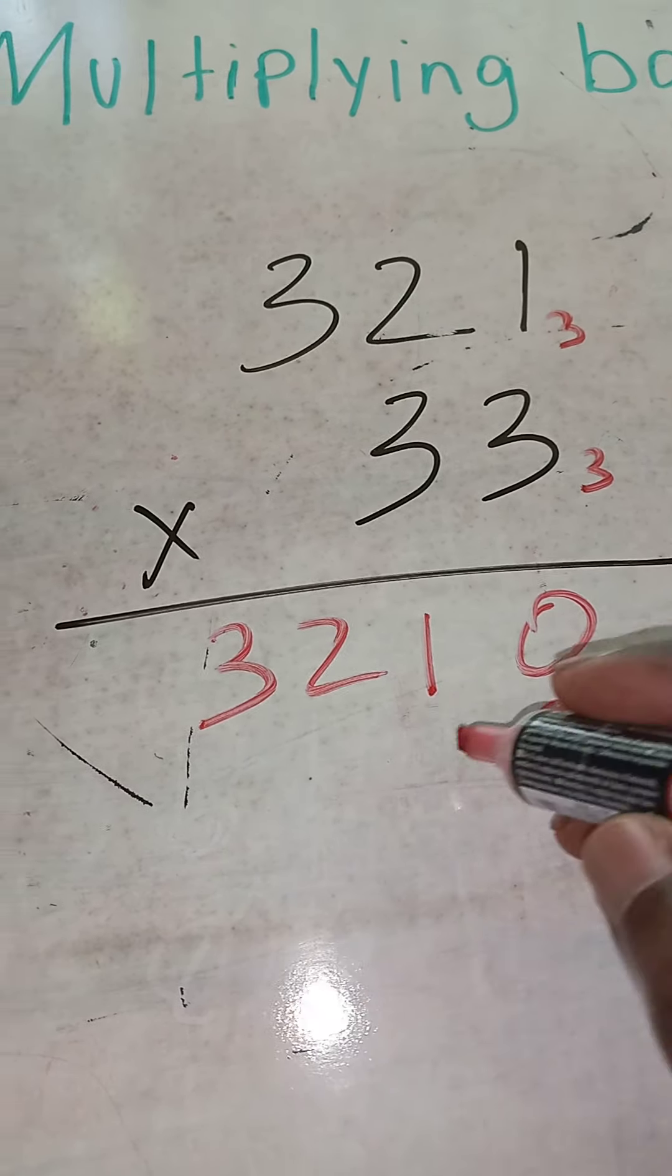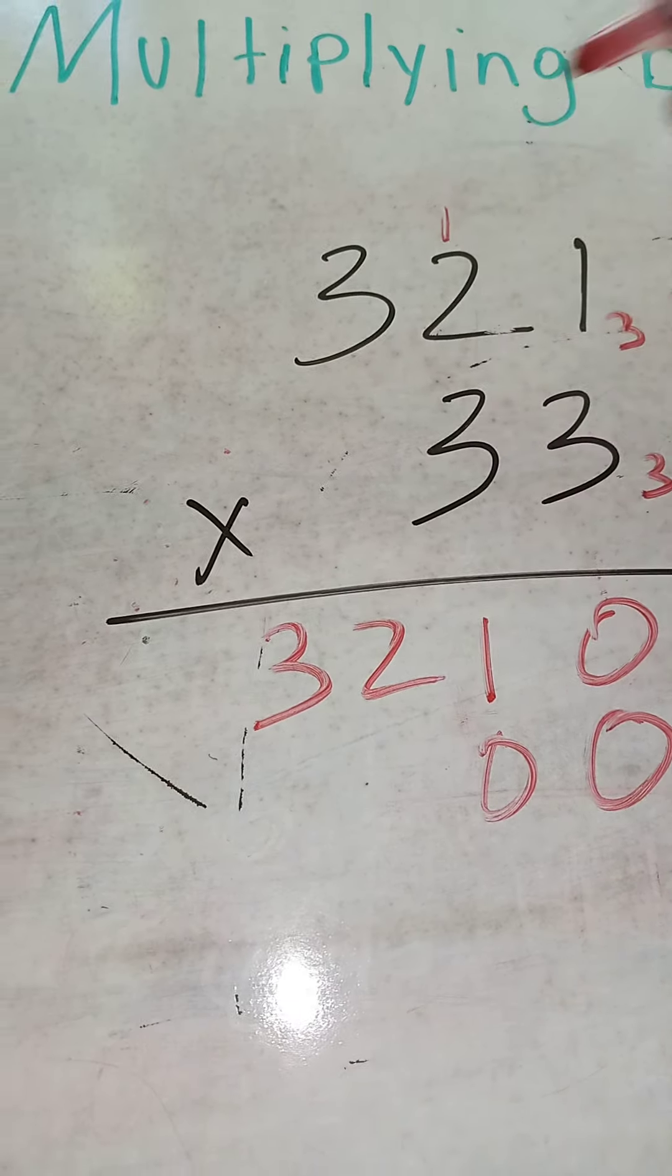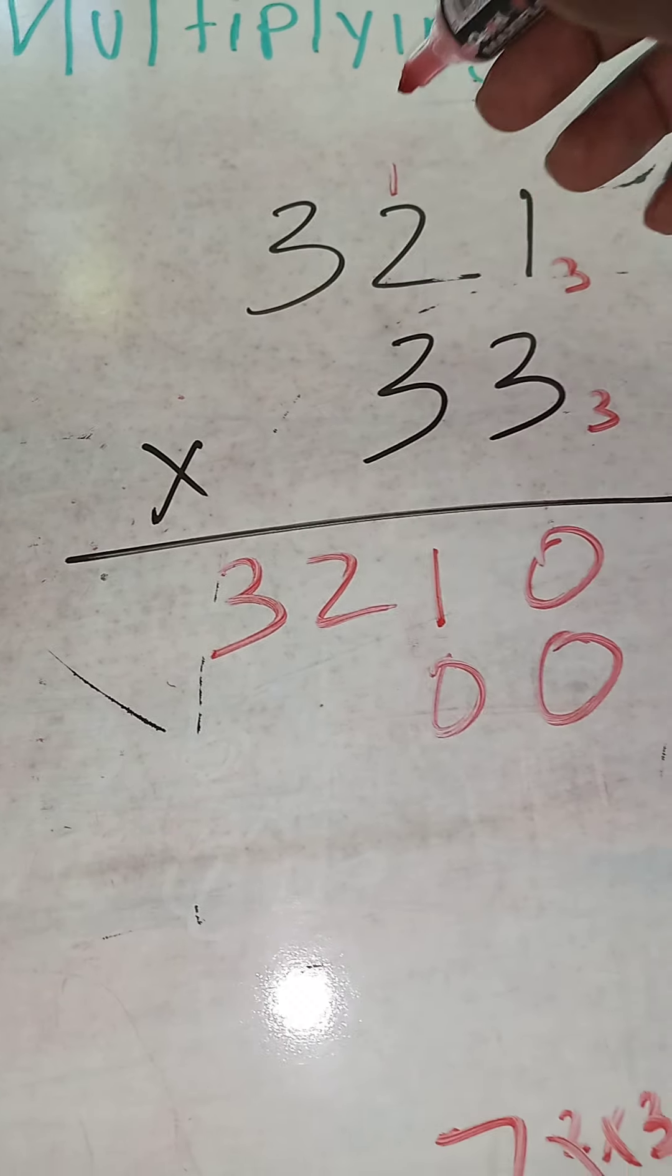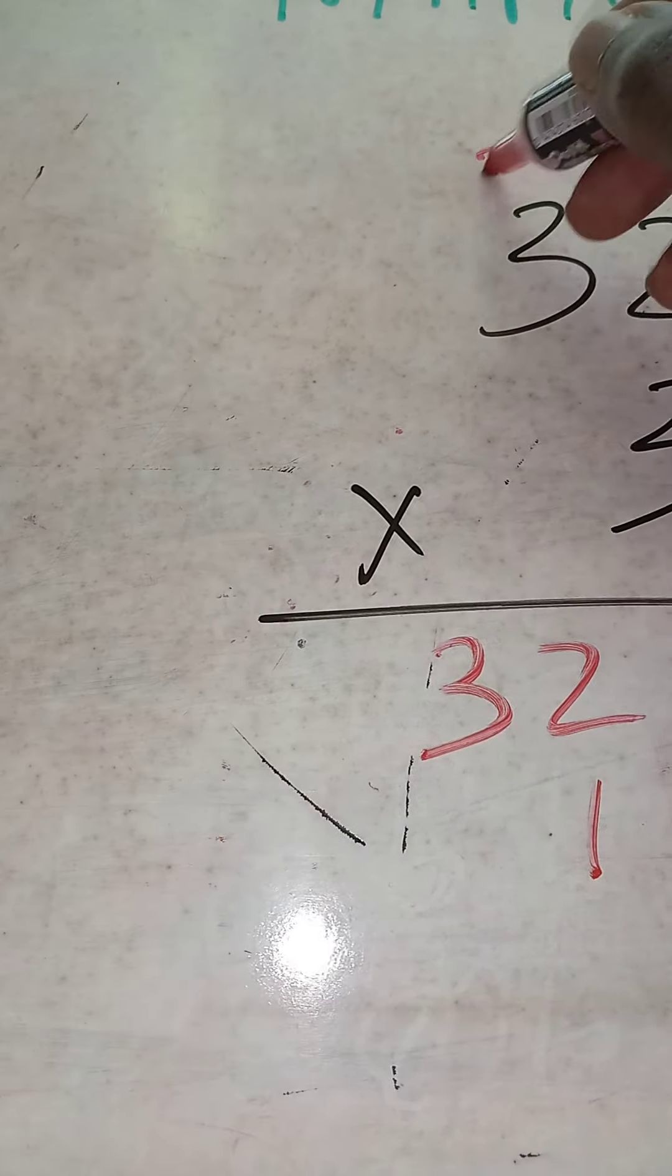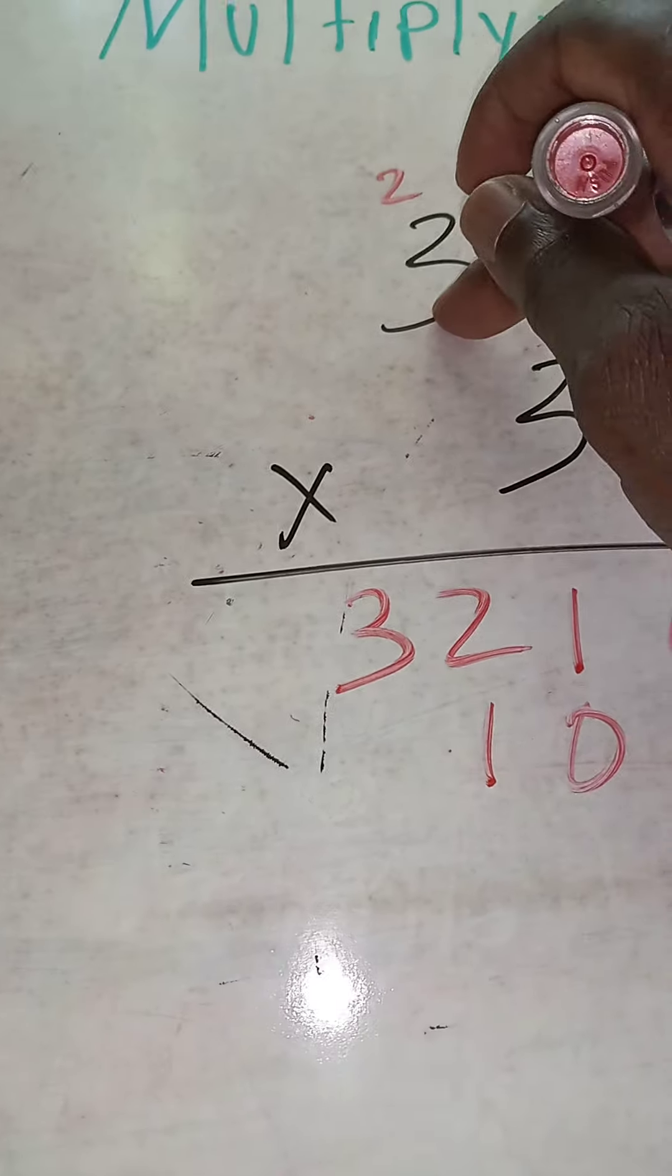The representation for 3 is 1 and 0. Put on the 0, carry the 1. 3 times 2 is 6 plus 1 is 7. The representation for 7 is 2-1, so put on the 1 and carry the 2.